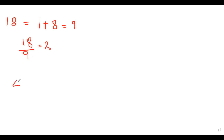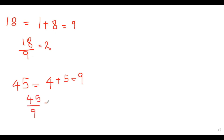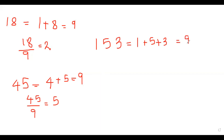Another example: 45. The Digital Root of 45 is 4 plus 5, that is 9. Since 9 is divisible by 9, 45 will also be divided by 9 without any remainder. So 45 is divisible by 9. Another example: 153. The Digital Root is 1 plus 5 plus 3, that is 9. Again, 9 is divisible by 9, so 153 is also divisible by 9.